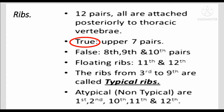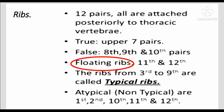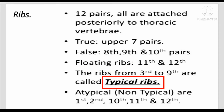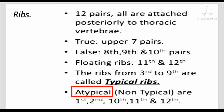The upper seven pairs are called true ribs. The eighth, ninth, and tenth pairs are called false ribs. The eleventh and twelfth are called floating ribs. The ribs from third to ninth are called typical ribs. The first, second, tenth, eleventh, and twelfth are called atypical ribs.